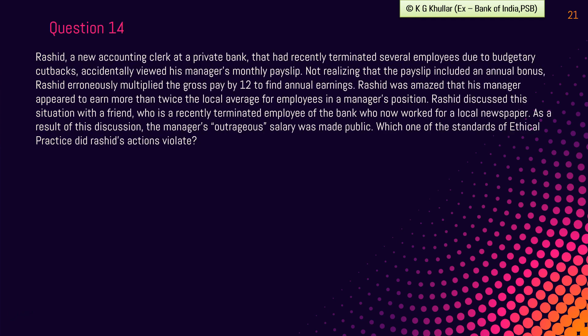Next question is a case study. Rashid, a new accounting clerk at a private bank that had recently terminated several employees due to budgetary cutbacks, accidentally viewed his manager's monthly payslip. Not realizing that the payslip included an annual bonus, Rashid erroneously multiplied the gross pay by 12 to find annual earnings, and was amazed that the manager appeared to earn more than twice the local average. Rashid discussed this with a friend who was a recently terminated employee of the bank and now working for a local newspaper. As a result, the manager's outrageous salary was made public. Which one of the following ethical practices did Rashid's actions violate? Options: competence, confidentiality, integrity, or credibility.